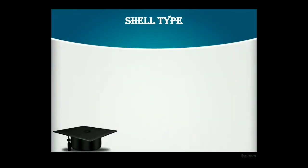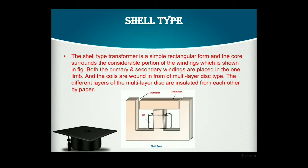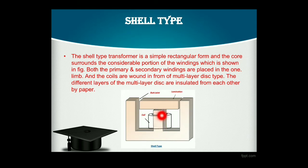Now the next slide is the shell type transformer. In case of core type transformer, two L-sections are connected to form the core. In case of shell type transformer, one E-section and another I-section are connected to each other. There is a central limb in the shell type transformer, whereas in the core type transformer there are two limbs. In the shell type transformer there are three limbs and the winding is installed in the central limb. The shell type transformer is of simple rectangular form and the core surrounds the considerable portion of the winding. Both the primary and secondary windings are placed in the one limb.